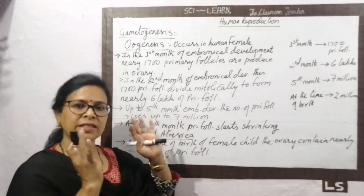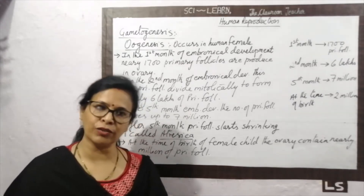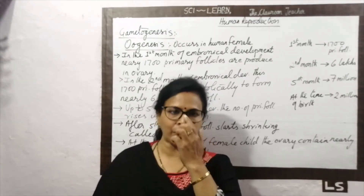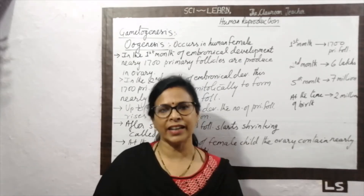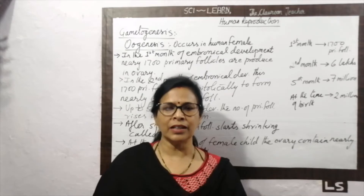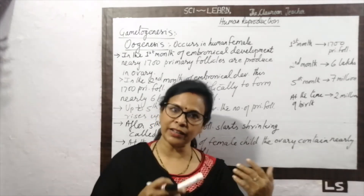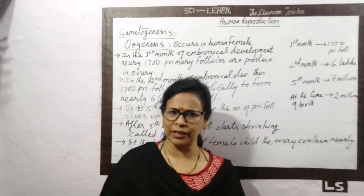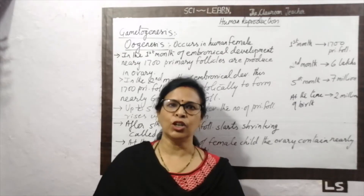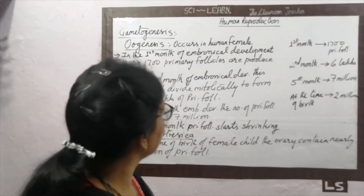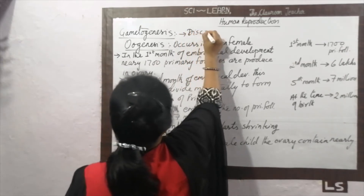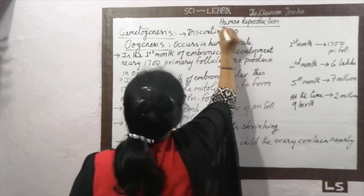The formation of the ovum, or oogenesis, actually starts before birth but gets stopped after the 5th month of gestation. It starts again at the time of puberty — nearly 10 to 12 years after birth. This is why the process is called a discontinued or discontinuous process.